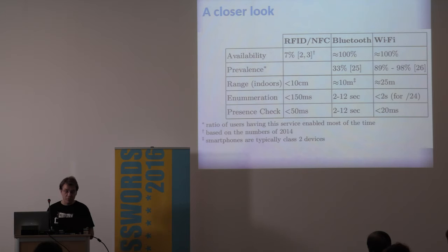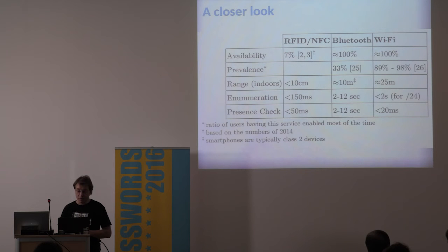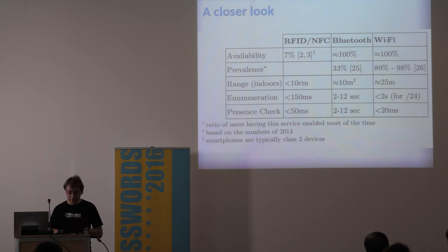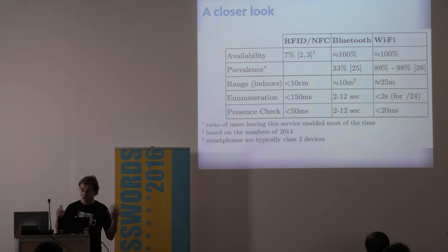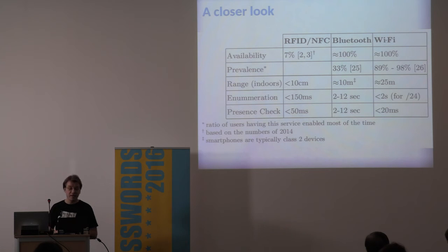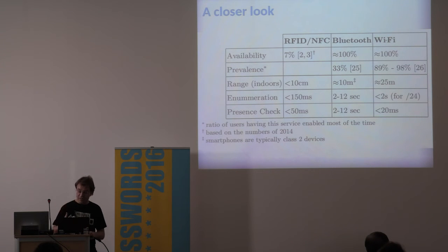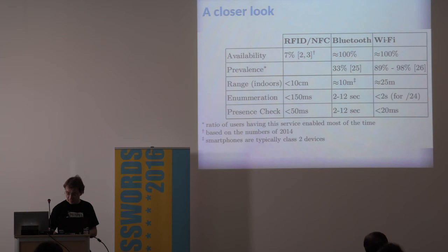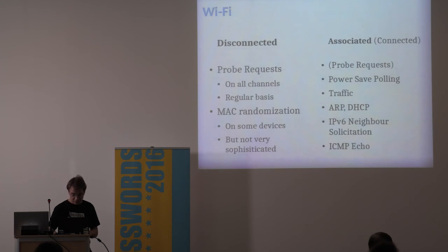It's interesting that there are sometimes different numbers for iPhone and Android users. We also compared the range, and how fast you can do a blind scan of your vicinity to find all devices, and how fast you can make a presence check — just checking if a specific device is present.